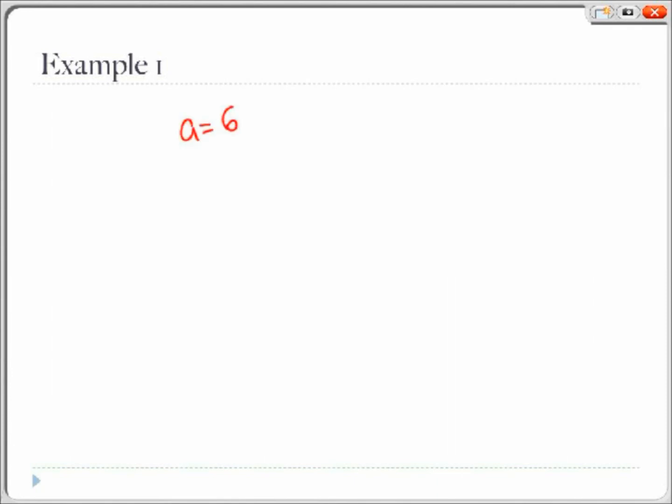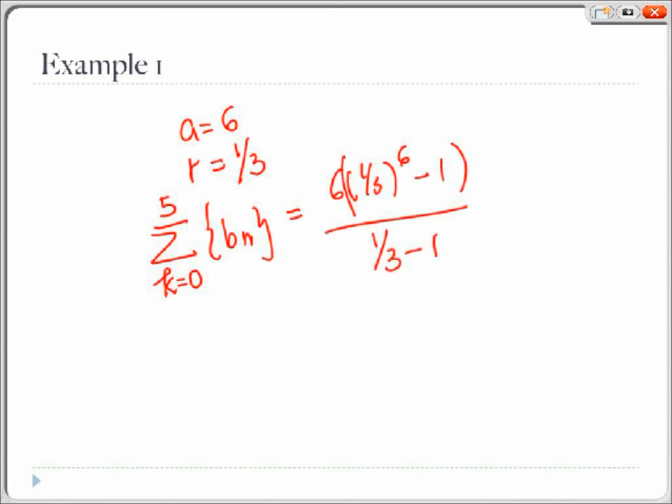The first term in the sequence is 6, so our a equals 6. And we have a common ratio of 1 third. So to compute the expression, we simply fill in the numbers we got for the variables. And our total is 8.9877.